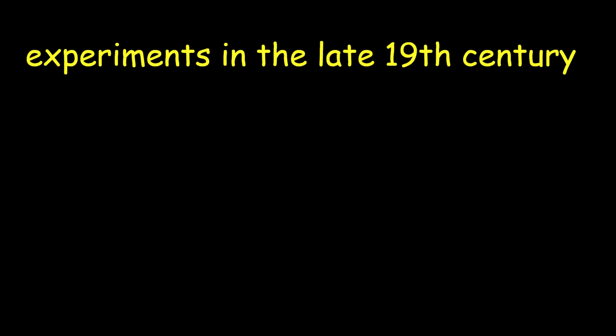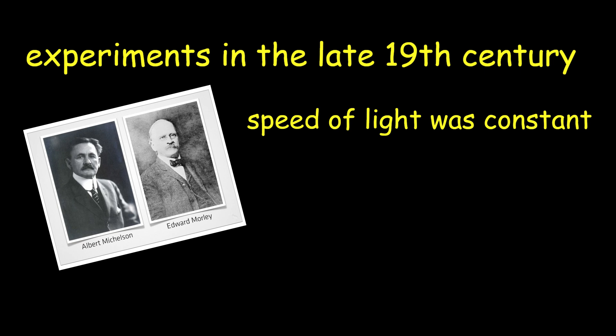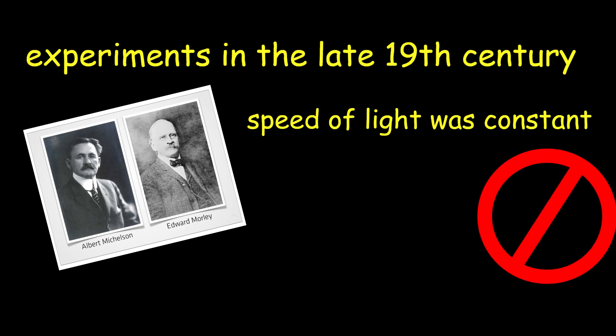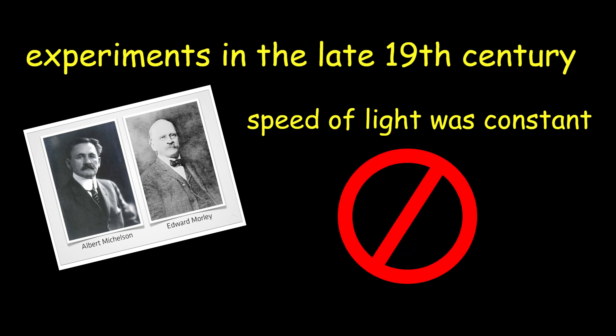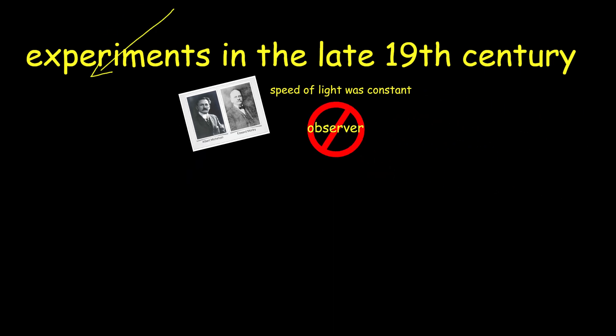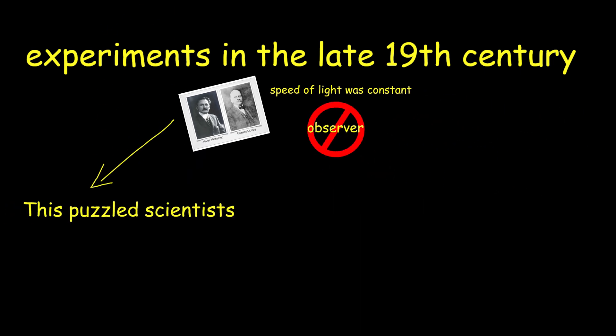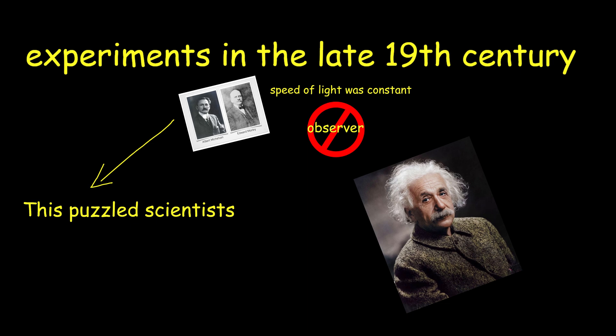However, experiments in the late 19th century, such as the Michelson-Morley experiment, suggested that the speed of light was constant and did not depend on the motion of the observer. This puzzled scientists and set the stage for Einstein's groundbreaking work.